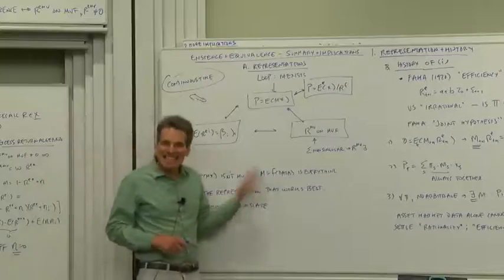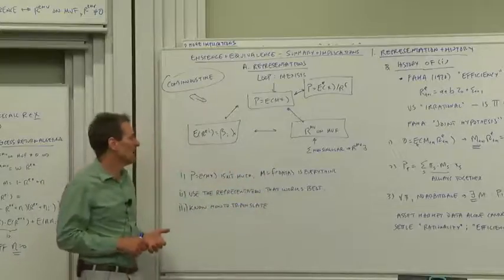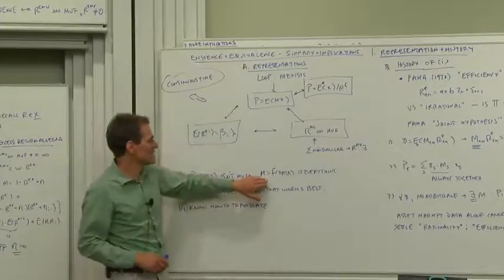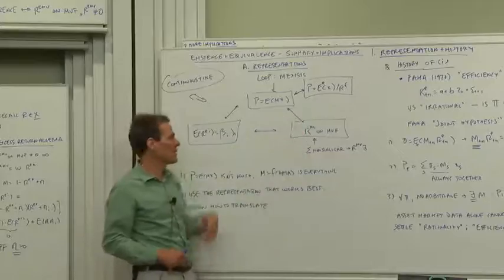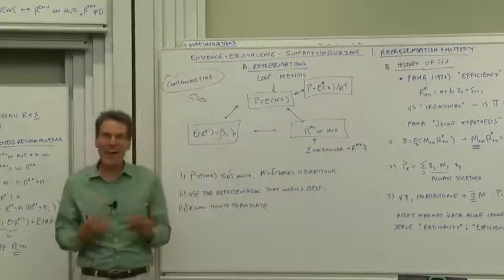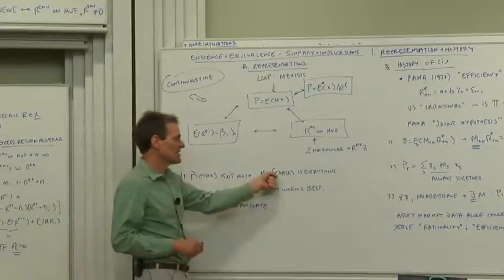If you want to test asset pricing models, if you want asset pricing models that are going to work out of sample, in particular connecting the discount factor or the risk neutral probabilities and so forth to data, figuring out what the factors are—that is where all the meat of an asset pricing model is.